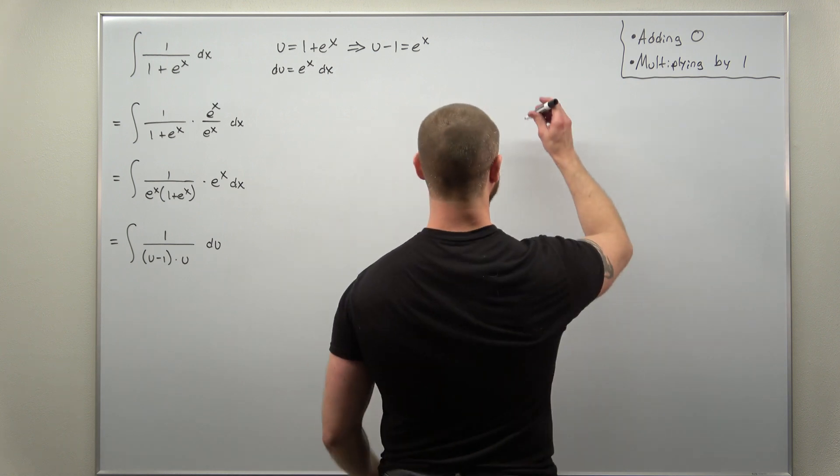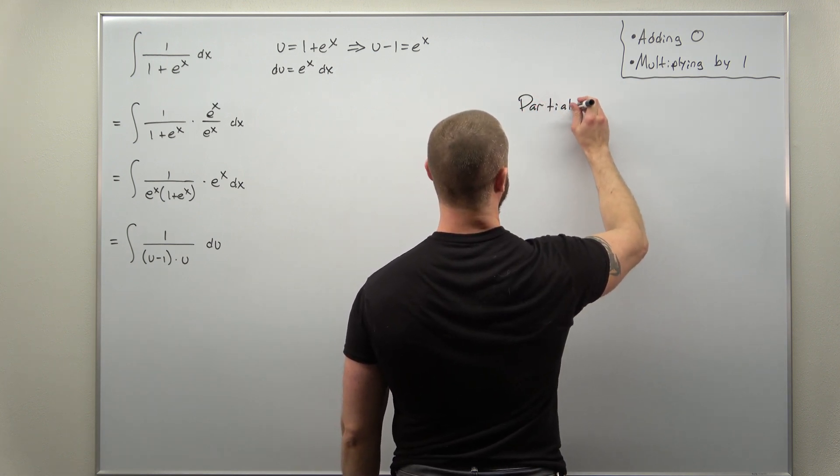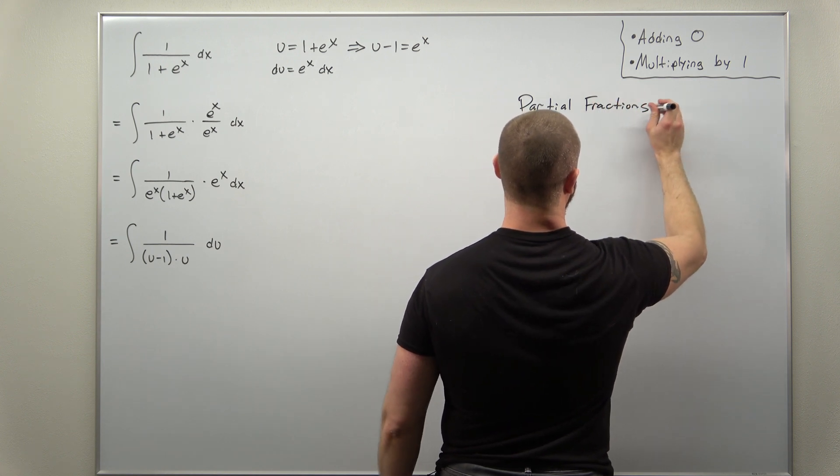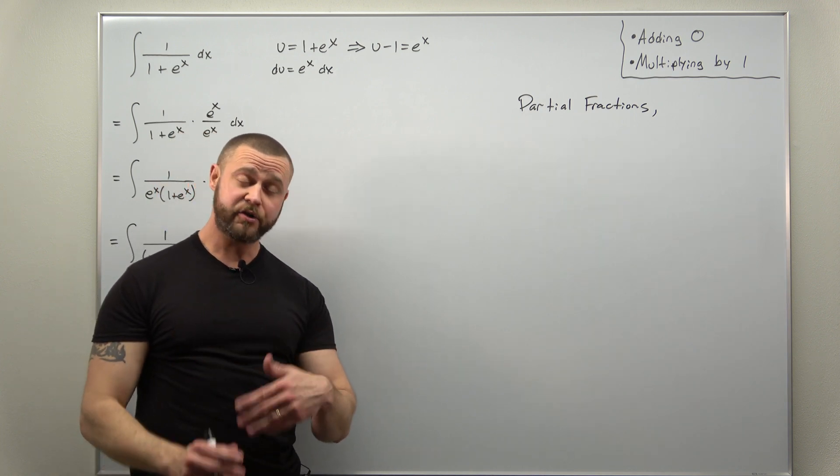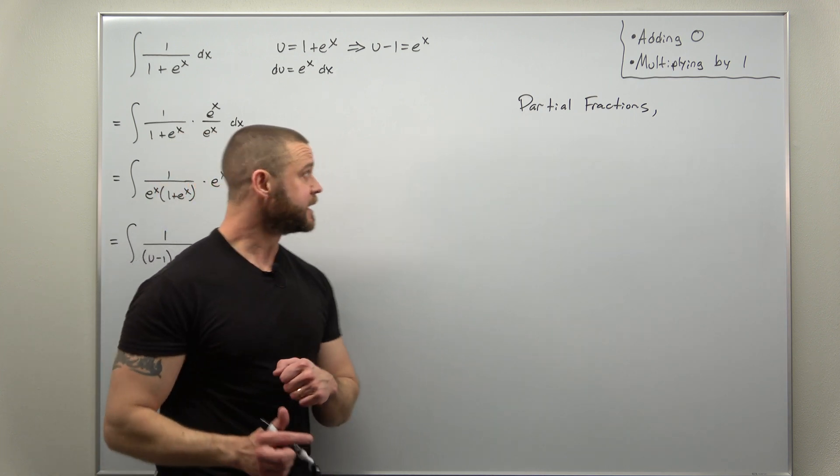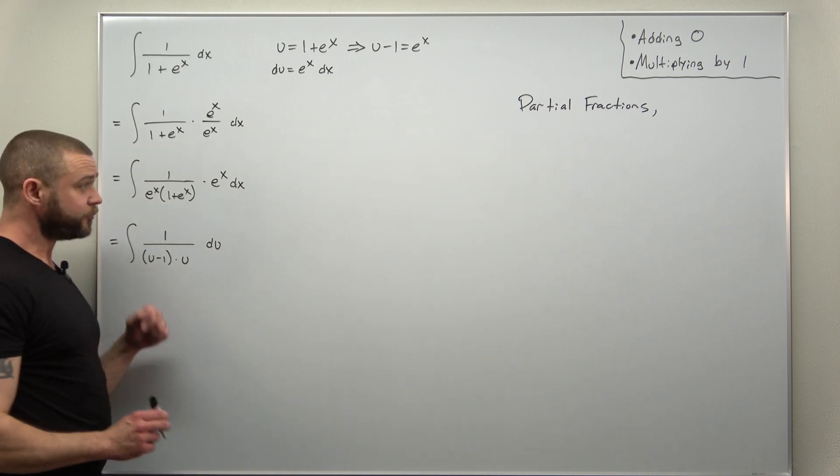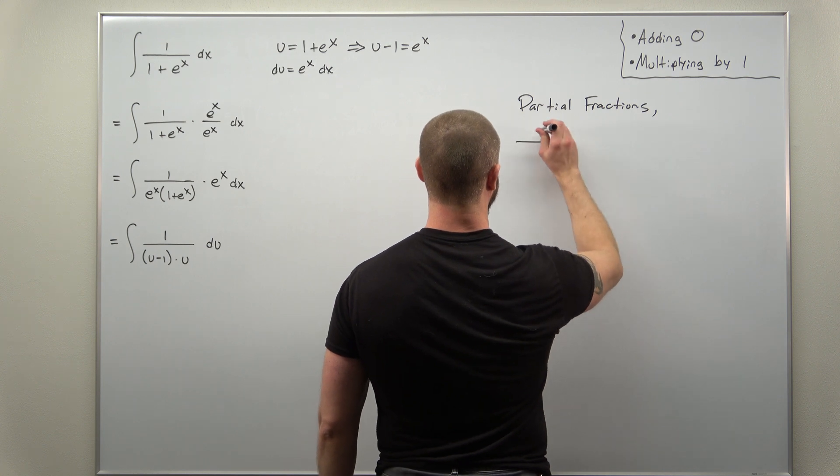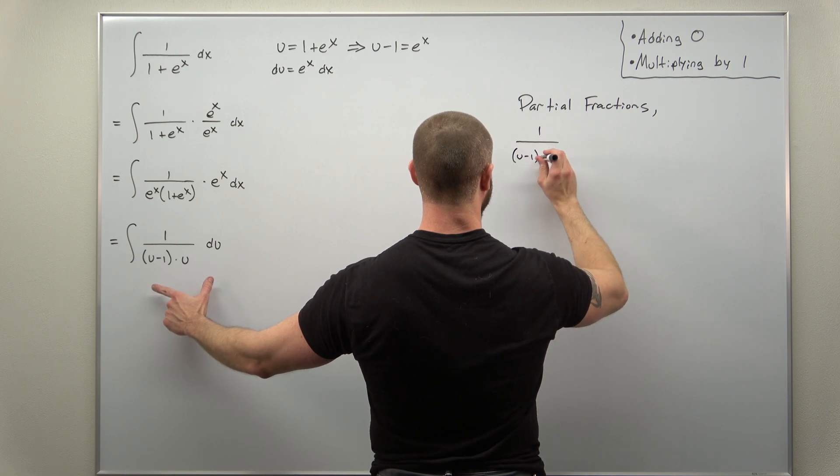And again, that should be in your working knowledge or toolbox after completing calculus 2. So we're going to rewrite this and evaluate that integral. Our function here, the fraction, is one over u minus one times u. There we have two distinct linear factors, we get two partial fractions.